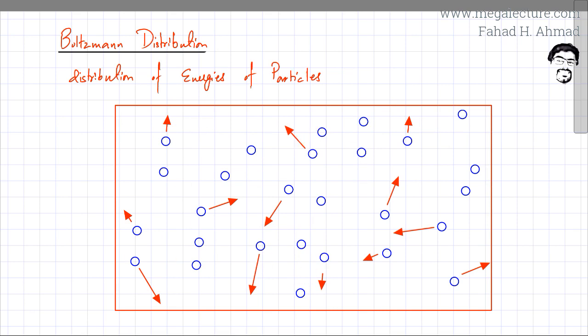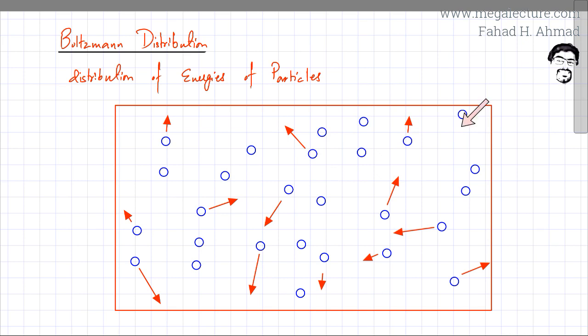All these particles are not going to be at exactly the same energy — they're randomly losing or gaining energy, so they will all have different energy levels. The energy is distributed, with each particle having its own specific amount. What I'm going to do now is plot the energy distribution — how the energy is distributed between the particles, and how many particles have a specific energy.